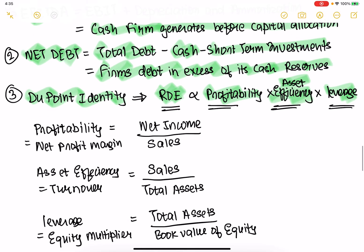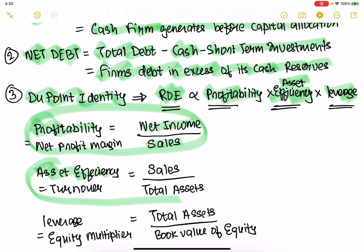Let's break down the DuPont identity. Profitability would be net income divided by revenue or sales — this gives you the net profit margin. Asset efficiency asks: are they actually turning things around quickly? So you find out their turnover — what is their sales divided by total assets? Are they actually selling things quickly? That is asset efficiency.